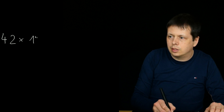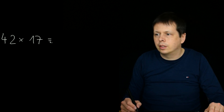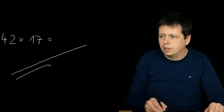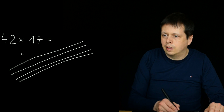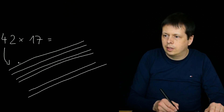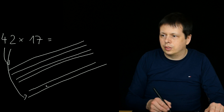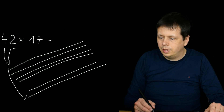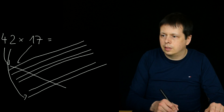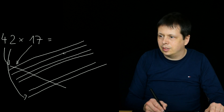One more example: 42 multiplied by 17. We draw four lines for the four of 42, then two lines for the two of 42. Then one line for the one of 17, and seven lines for the seven of 17.